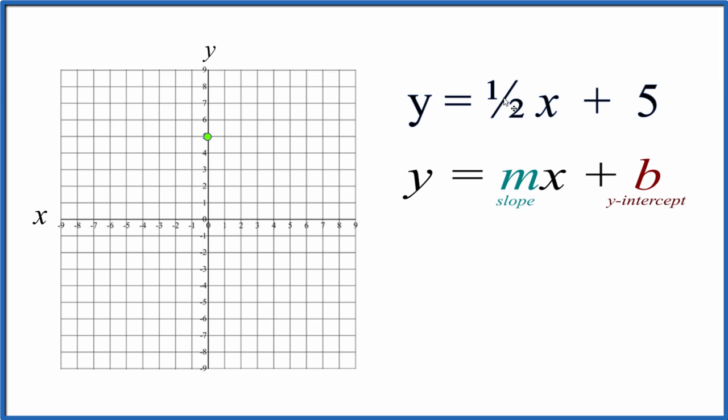For the slope, we have 1 over 2x. You can think of that as rise over run. So we go to the y-intercept here, that 5 that we found. We rise 1, we run 1, 2.